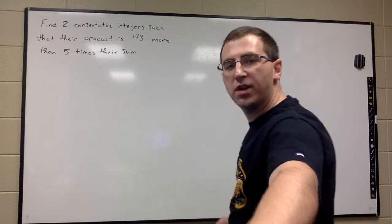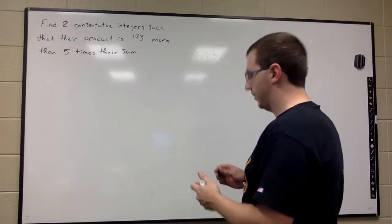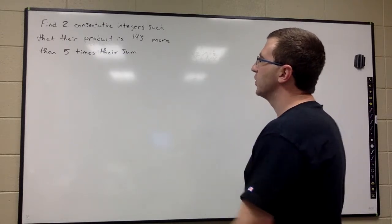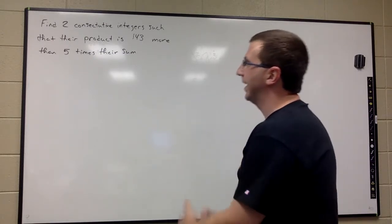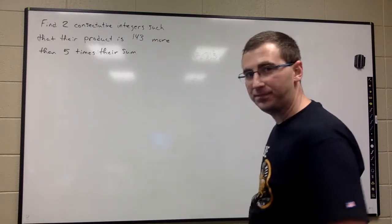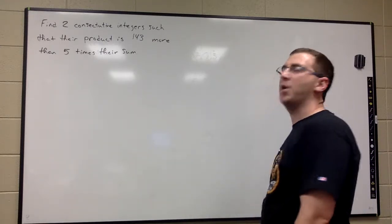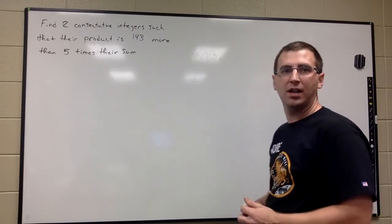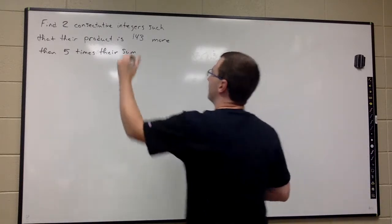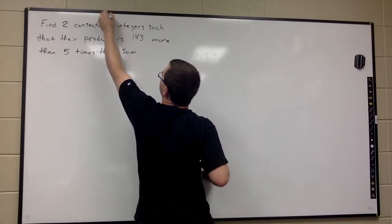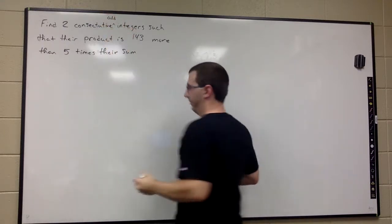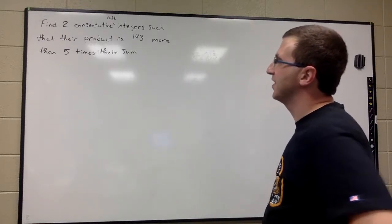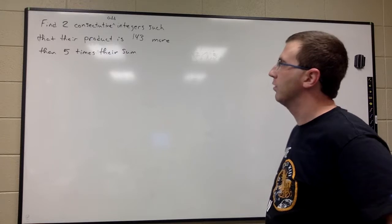Another question that was emailed to me: find two consecutive odd integers such that their product is 143 more than five times their sum.